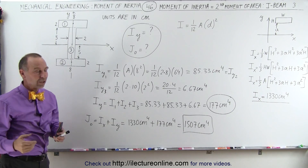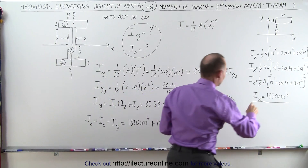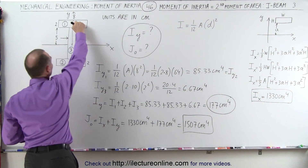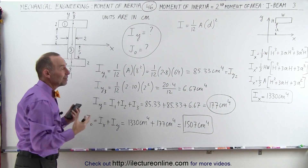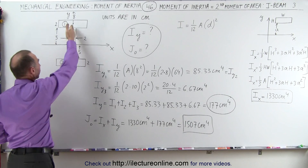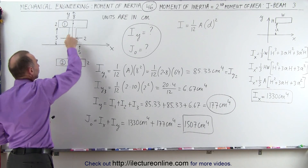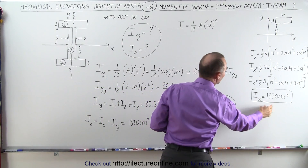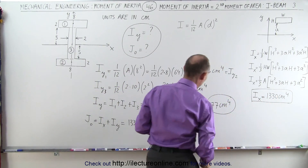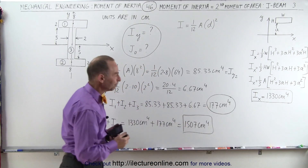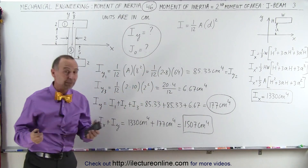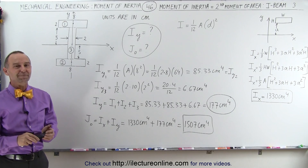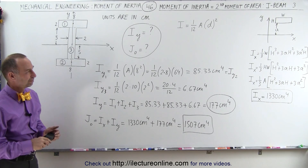Notice that the largest contributor to the moment of inertia was definitely the two plates at the end, which is what makes the I-beam so strong. There's not a lot of strength to be gained from the central section, but from the two end sections we gain a large portion of the moment of inertia. That's how you find the moment of inertia of an I-beam.